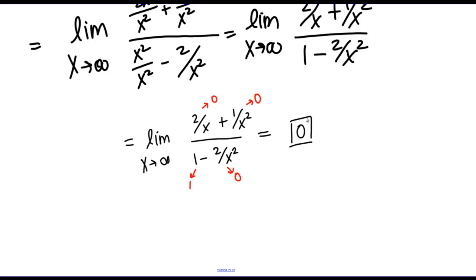We can actually draw an important conclusion about the shape of the graph from this limit. The limit as x goes to infinity of a function can tell us if a function has any horizontal asymptotes. So in this case, I can conclude that this function has a horizontal asymptote at y equals 0 on the right-hand side of the graph.